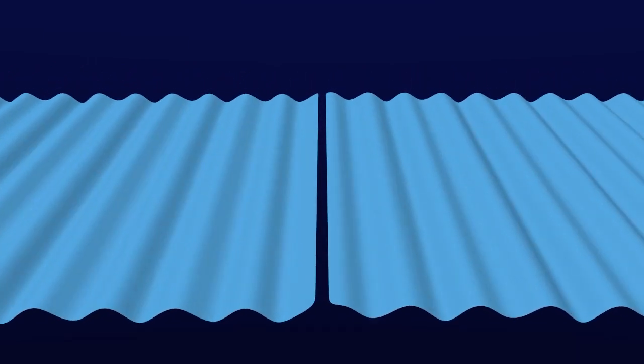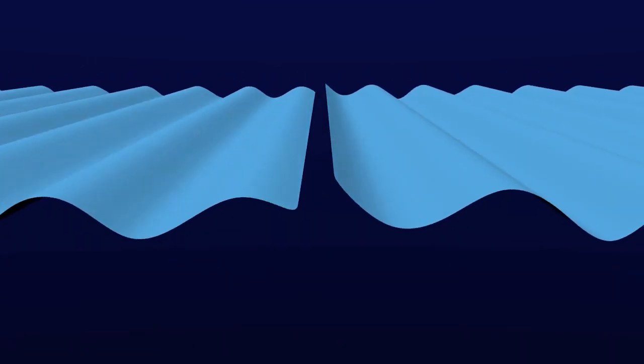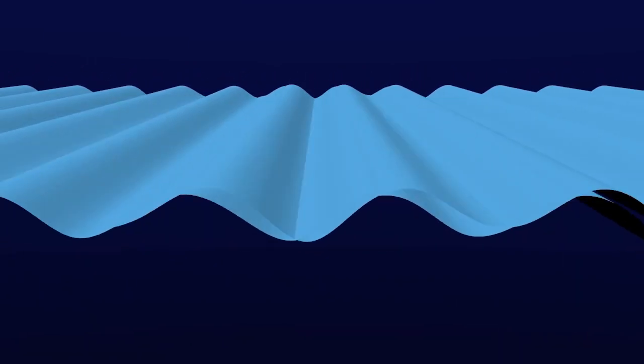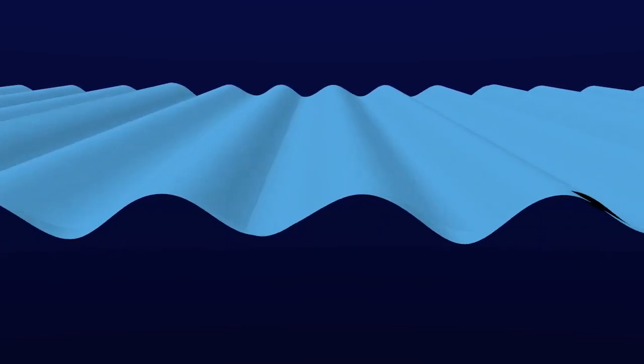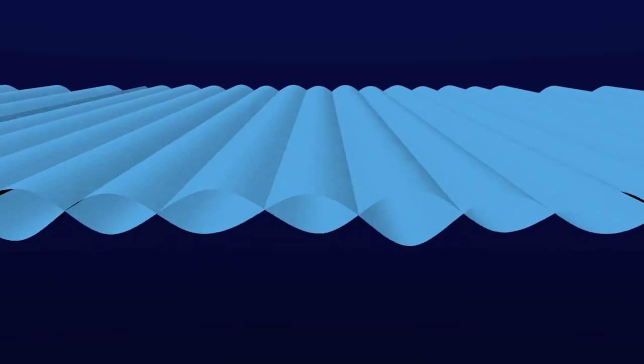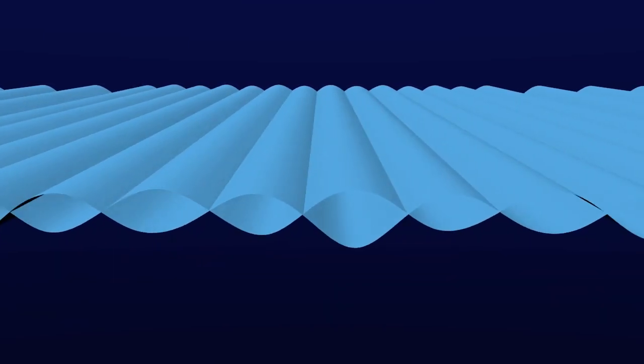If two waves meet, sometimes one peak meets another whilst a trough meets another trough, so these waves are in phase. However, sometimes a peak will meet a trough, canceling each other out.